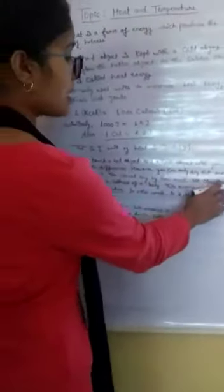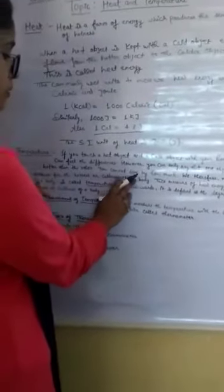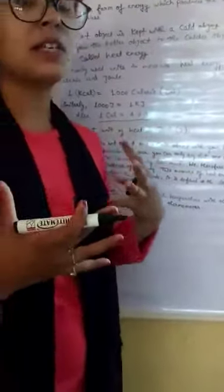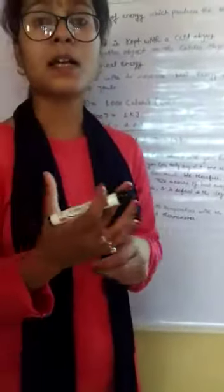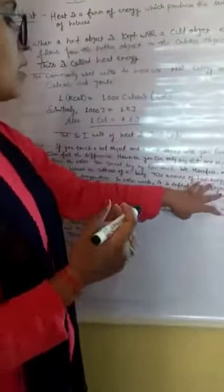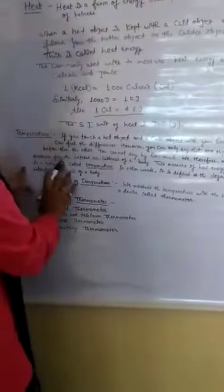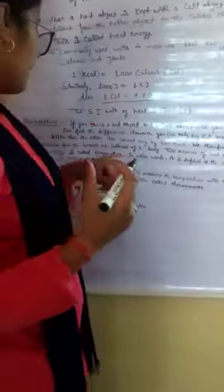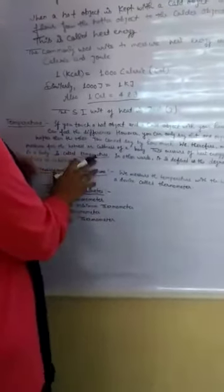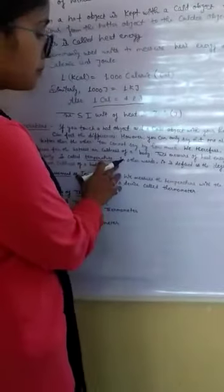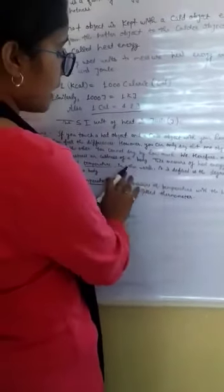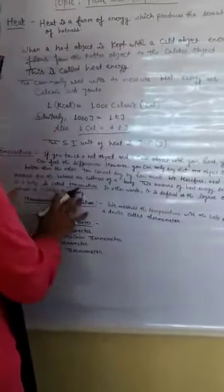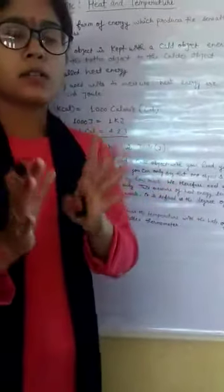So we therefore need a measure for the hotness and coldness of a body. This measure of heat energy level in our body is called temperature. In other words, we can say it is defined as the degree of hotness and coldness of our body.